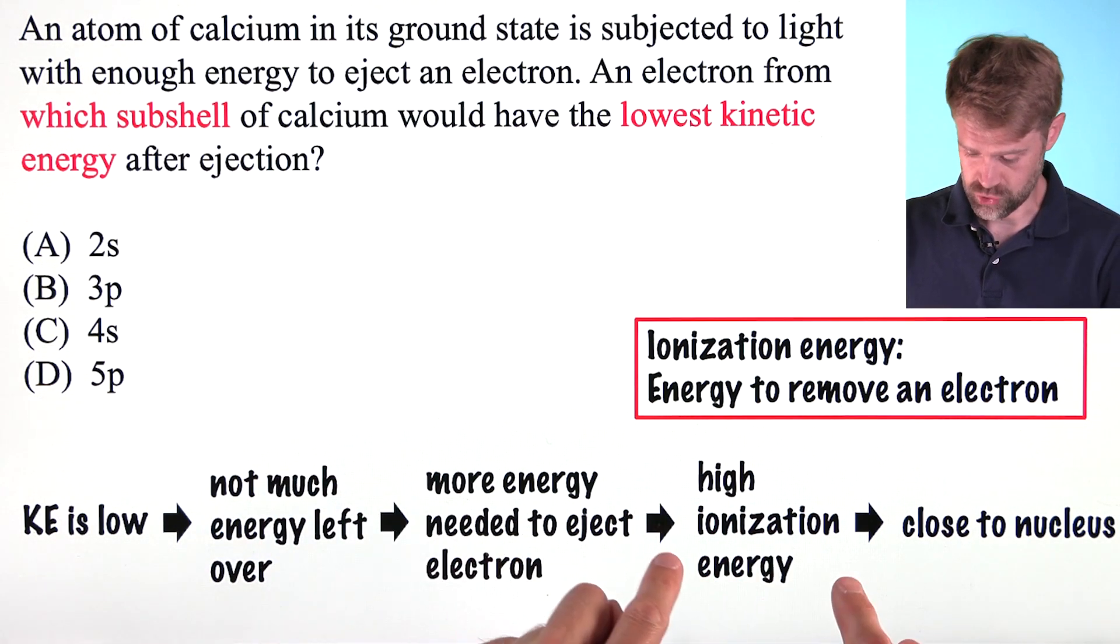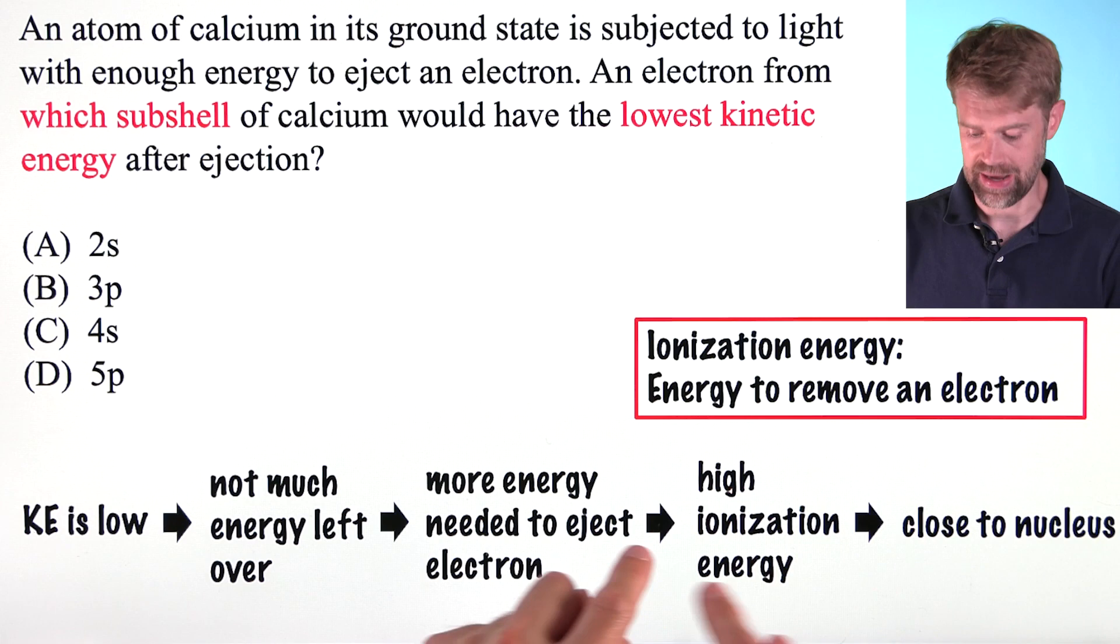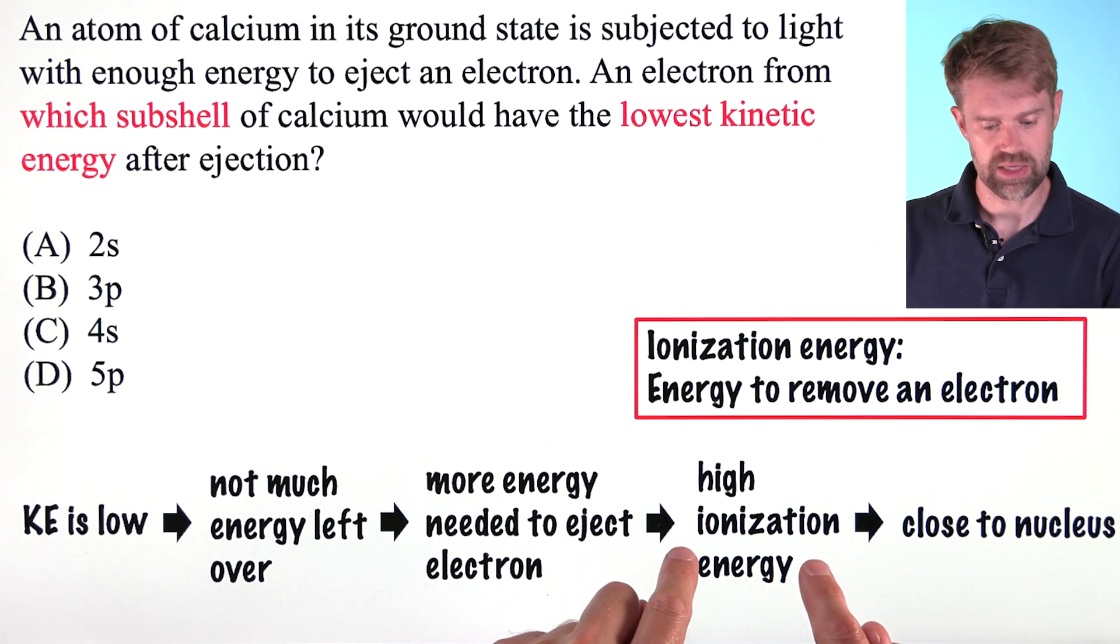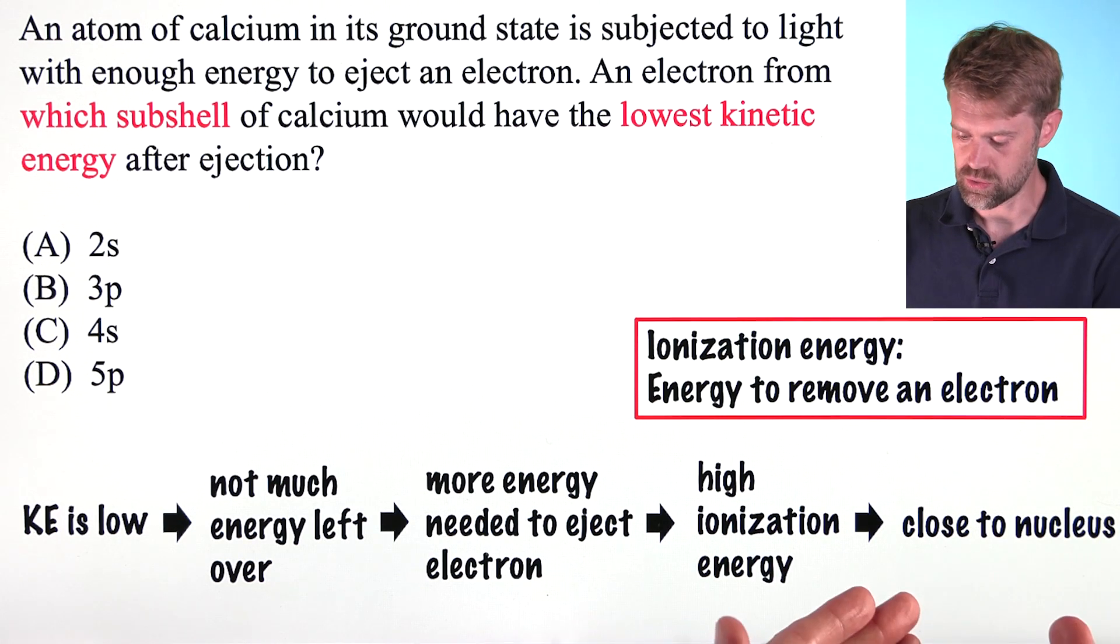which means the electron had a high ionization energy, which means that the electron was close to the nucleus.